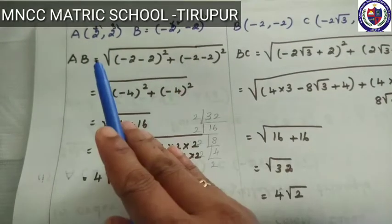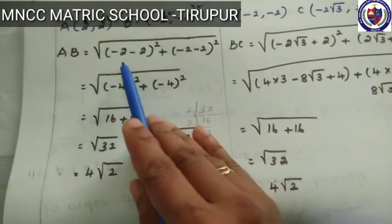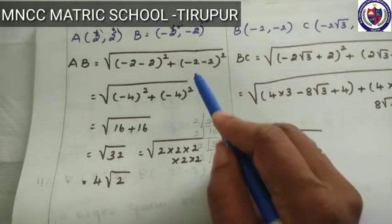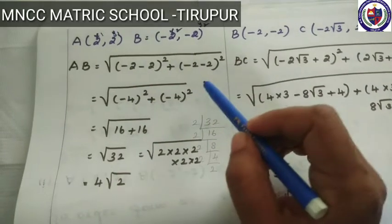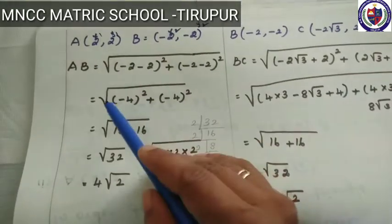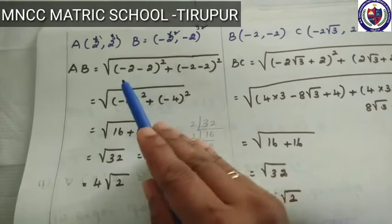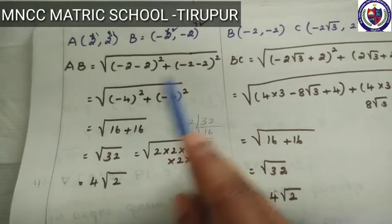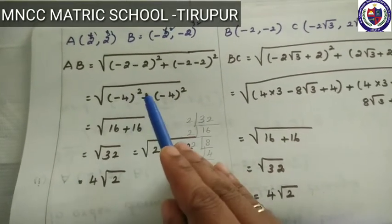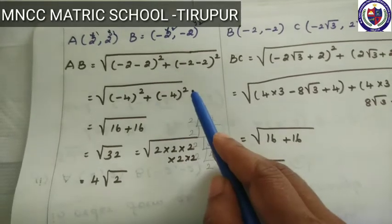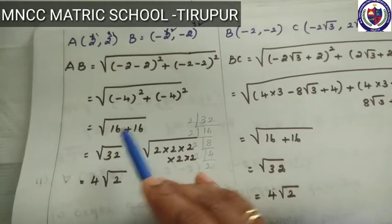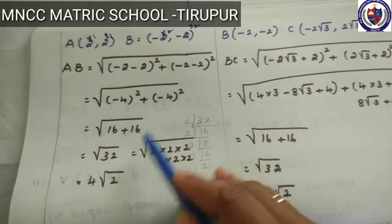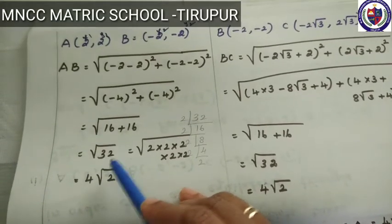Substitute the values: x2 - x1 = (-2 - 2)², plus y2 - y1 = (-2 - 2)². That is equal to √[(-2-2)² + (-2-2)²] = √[(-4)² + (-4)²] = √[16 + 16].